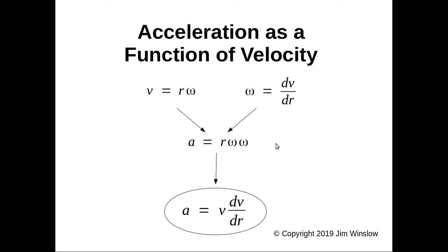So from the previous slide we had a = rω². That's r·ω times ω. v = rω. We can substitute v into here to replace rω. Now if we take the derivative of v with respect to r, we get ω. That's just basic algebra, basic pre-calc.